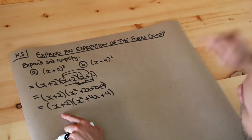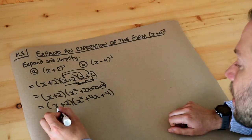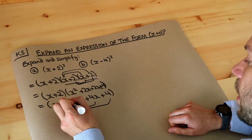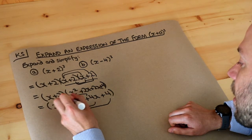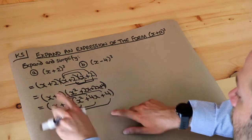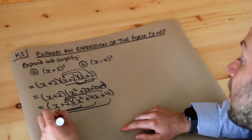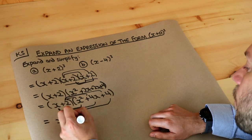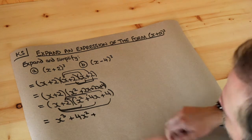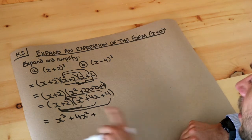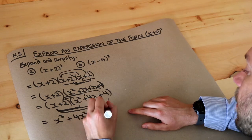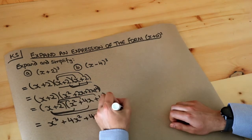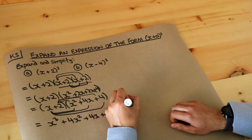We do each thing in the first bracket multiplied by each thing in the second. So x times x squared is x cubed. x times 4x — well, x times x is x squared, so that's 4x squared. Then x times 4 is 4x. Then 2 times x squared is 2x squared. 2 times 4x is 8x, and 2 times 4 is 8.